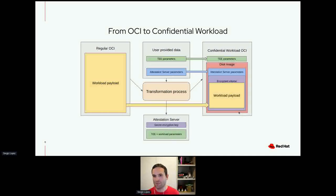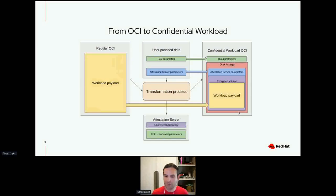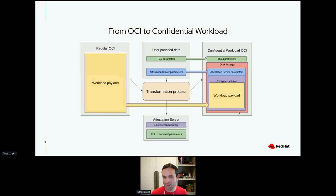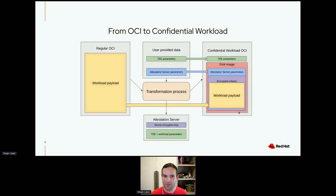The actual build process for converting a regular OCI image into a confidential workload OCI image is fairly simple. We create a disk image file, format it with LUKS, generate a random encryption key, mount it, copy the contents of the original OCI image into this LUKS-encrypted volume, then create a new OCI image that contains both this disk image and the TEE parameters needed to launch a VM. Once this new image is created, we push it to a registry and also send both the encryption key needed to unlock the storage and the measurement with the workload parameters to the attestation server.